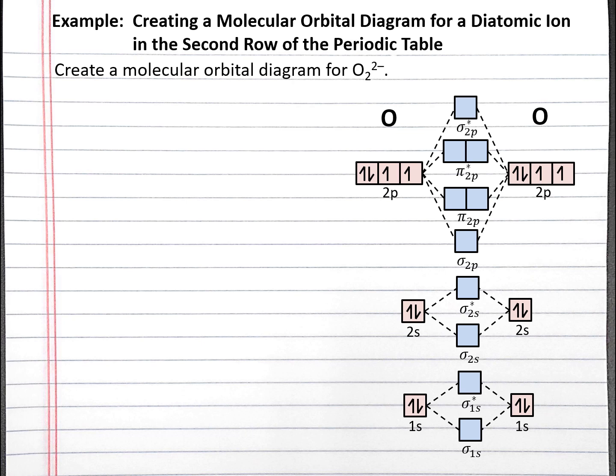Whether the pi 2p or sigma 2p bonding orbitals are lower in energy depends on the atoms in the molecule or ion. For B2, C2, and N2, the pi 2p bonding molecular orbitals are lower in energy than the sigma 2p bonding molecular orbitals. But for O2, F2, and Ne2, the sigma 2p bonding molecular orbitals are lower in energy.